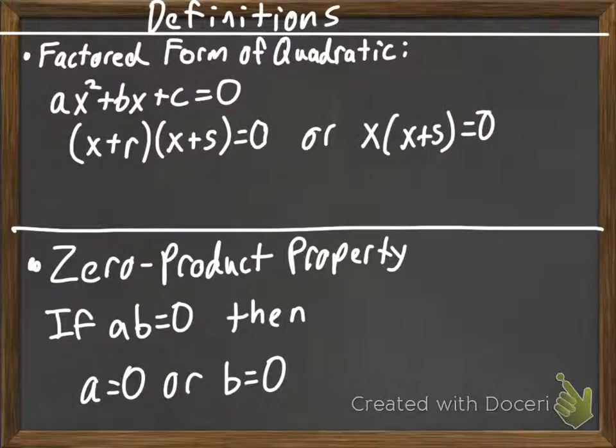So, a couple definitions. The factored form of quadratic, and our quadratic is ax squared plus bx plus c, can be two things.